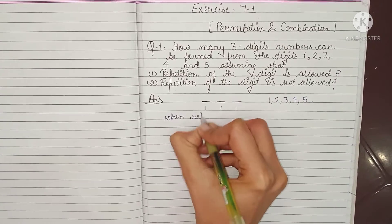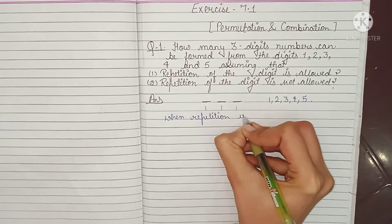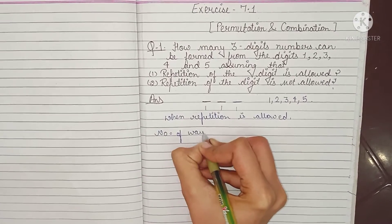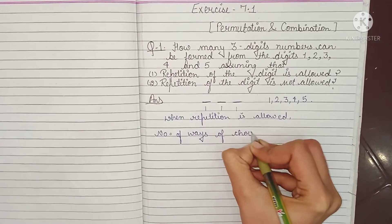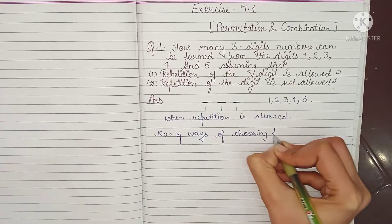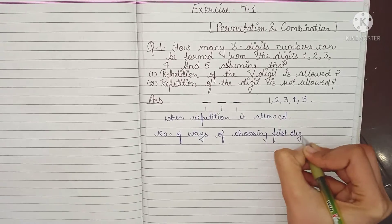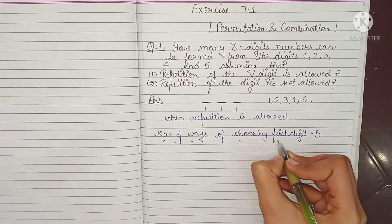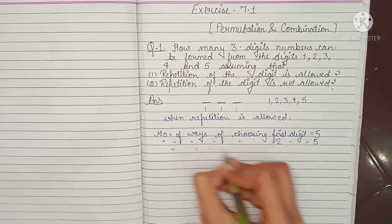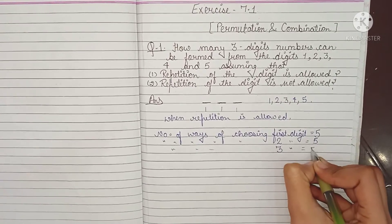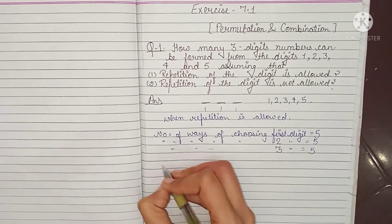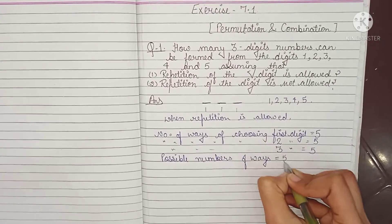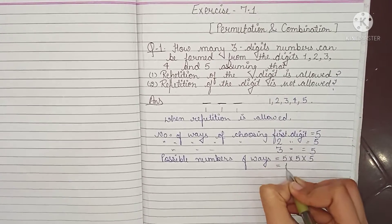So when repetition is allowed, number of ways of choosing the 1st digit is 5. Number of ways of choosing the 2nd digit is also 5. And number of ways of choosing the 3rd digit is also 5, because repetition is allowed. So total number of possible ways is equal to 5 × 5 × 5, which equals 125.